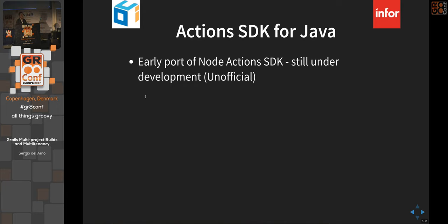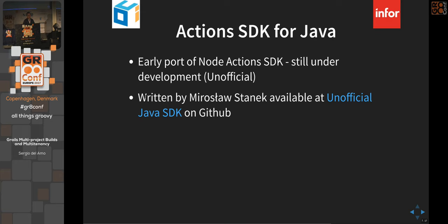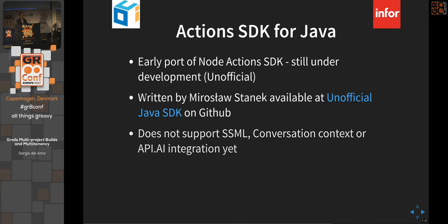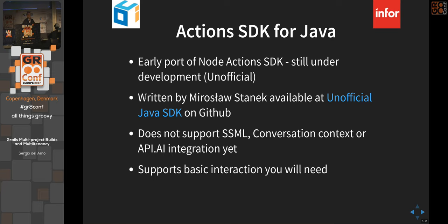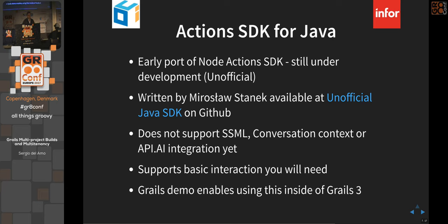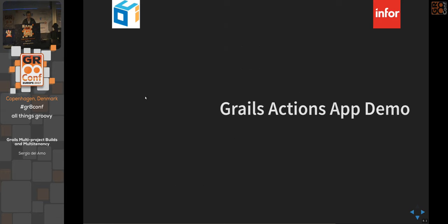There are two ways to build actions: the Actions SDK for Java — an unofficial port of the Node SDK made by Murkoslaw Stantec on GitHub — and API.AI. The Java SDK doesn't yet support SSML or conversation context (session state), so it can't remember things like a user's name across turns, but it handles most basic functionality. It enables using actions in Grails 3.